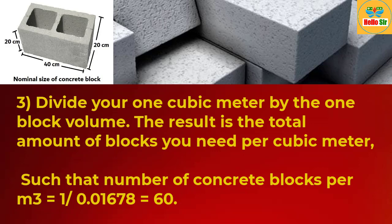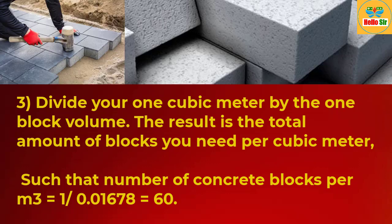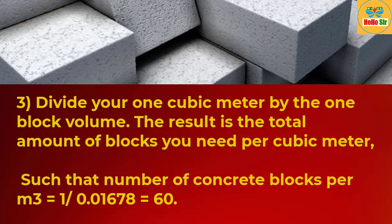That result gives the total number of blocks needed per cubic meter. So, one divided by 0.01678 comes out to around 60 blocks per cubic meter. Thank you.